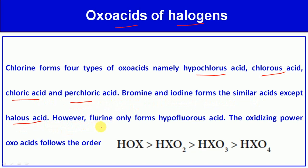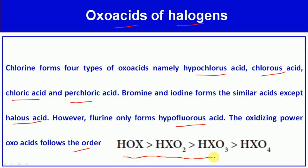Fluorine only forms hypofluorous acid. The oxidizing power of oxoacids follows the order: HOX > HXO2 > HXO3 > HXO4. This is the order of oxidizing power of oxoacids.